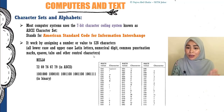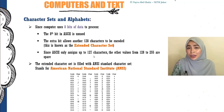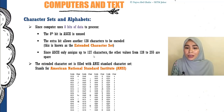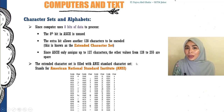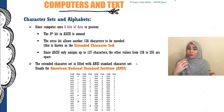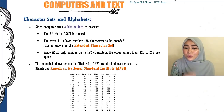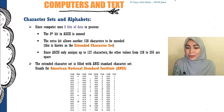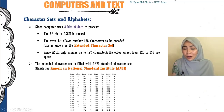ASCII only uses a 7-bit character code, but computers usually process 8 bits of data, leaving an extra 1 bit unused. So they created an extended character set called ANSI — which uses that extra bit to accommodate more characters.